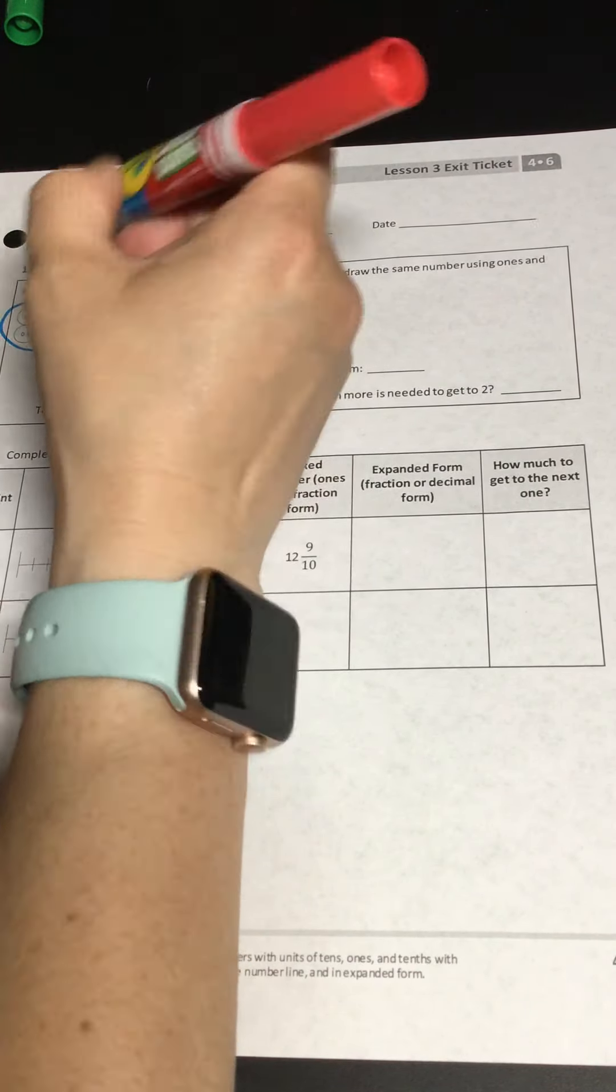So we're going to circle them. One, two, three, four, five, six, seven, eight, nine, ten. So here's one group that makes one.